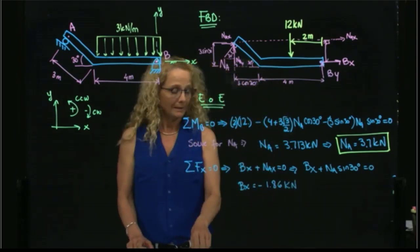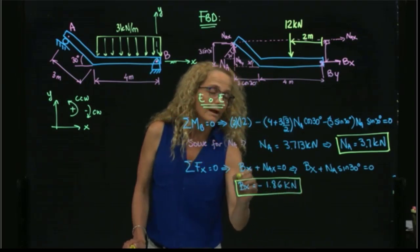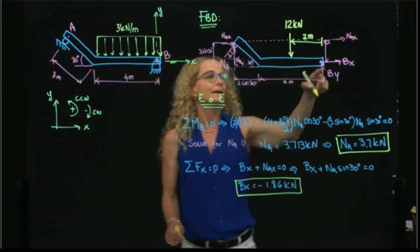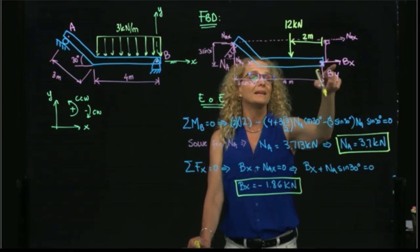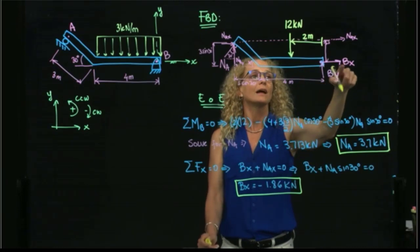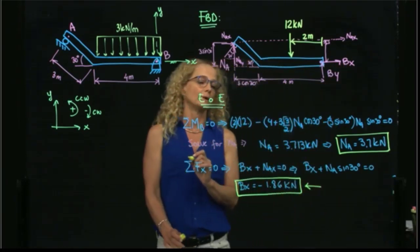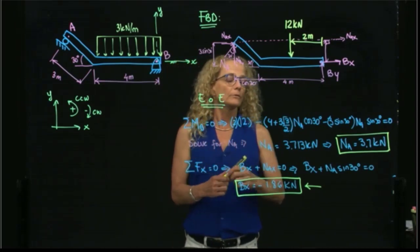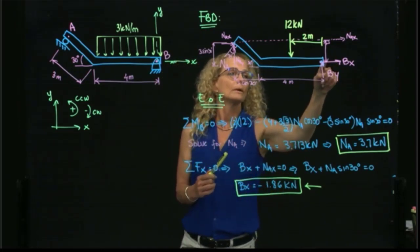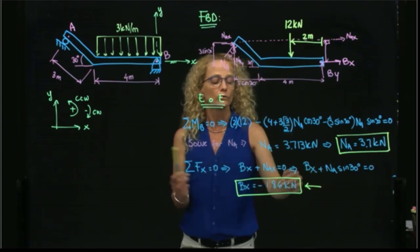What does it mean that I have a negative value? It means that if I, at the beginning, said that my force BX is in this direction, because pins can work in both directions, and I found that this is negative, it means it goes in this direction. Because I assumed it was going to the right and got a negative value, therefore it goes to the left.